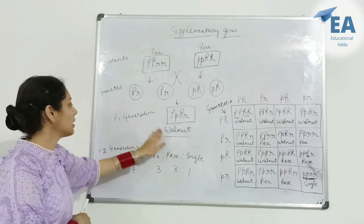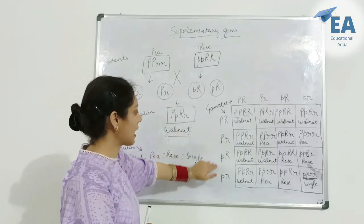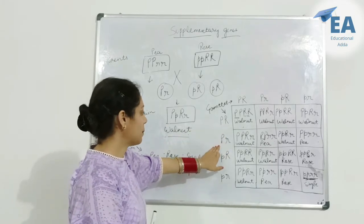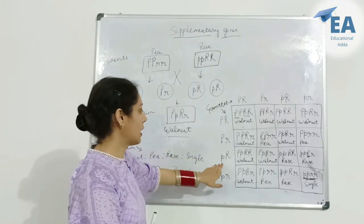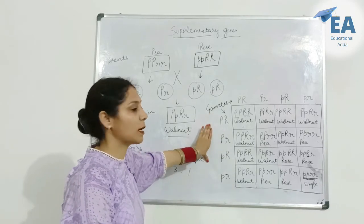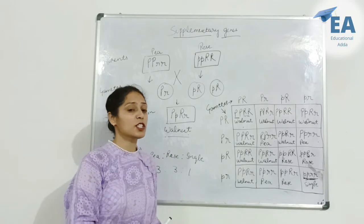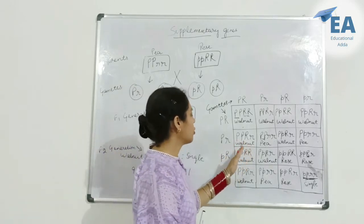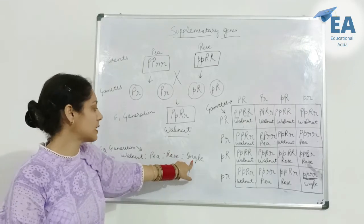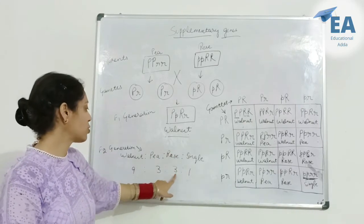In the F1 generation these are supplementary genes. Now for the F2 generation, we have four gametes: capital P capital R, capital P small r, small p capital R, and small p small r. After selfing, we get four combinations — walnut, pea, rose, and single — in a 9 to 3 to 3 to 1 ratio.